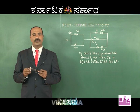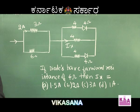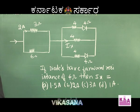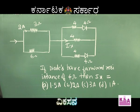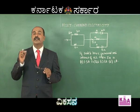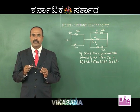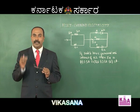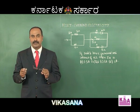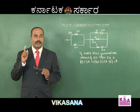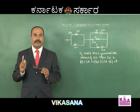Dear student, you must know this. If diodes are in the forward biased condition, it allows the flow of current. However, it offers some particular resistance for the flow of current. That particular resistance is called as forward resistance.